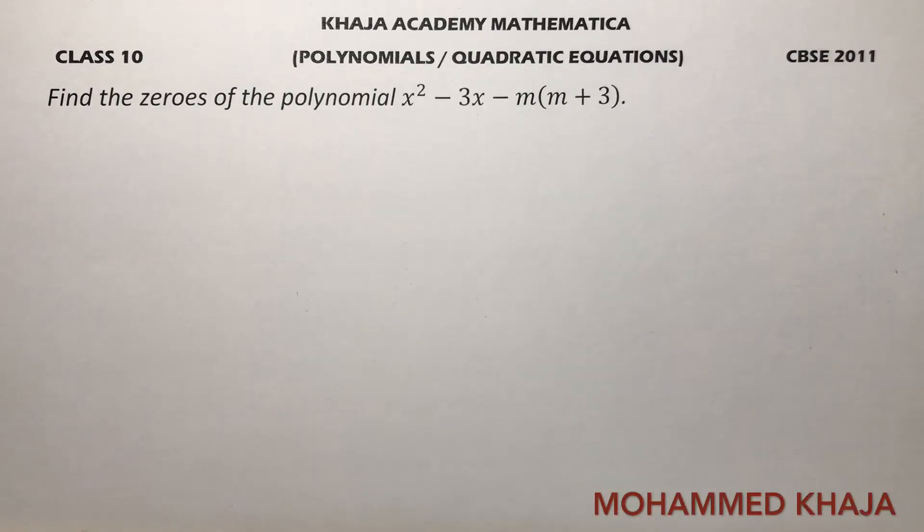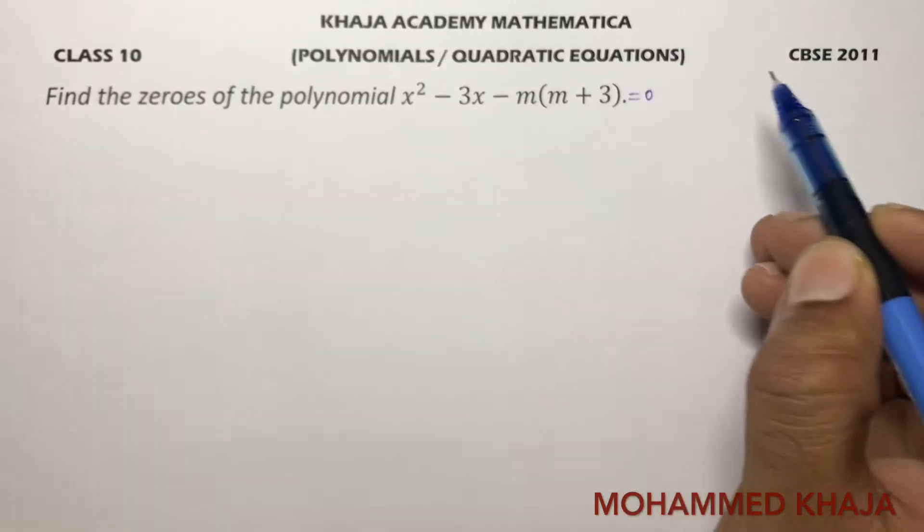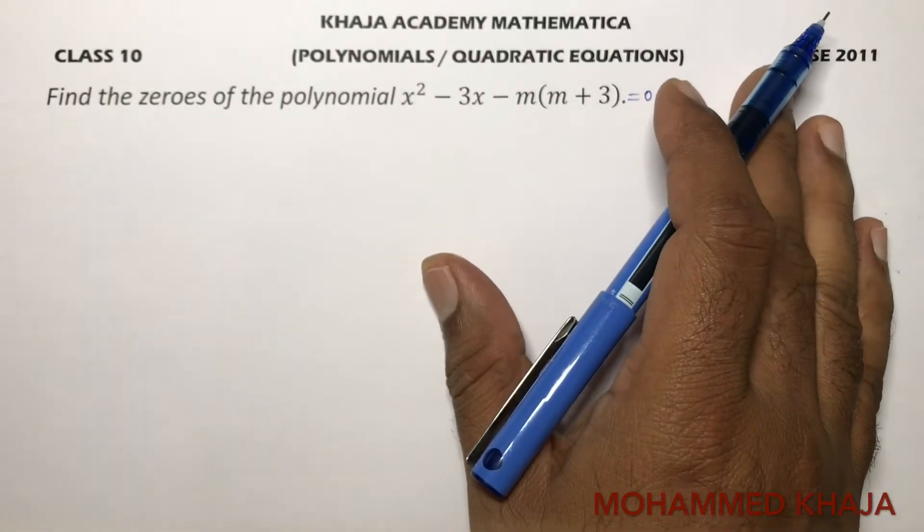Find the zeros of the polynomial x² - 3x - m(m + 3) = 0. Here we need to find the zeros of the polynomial.